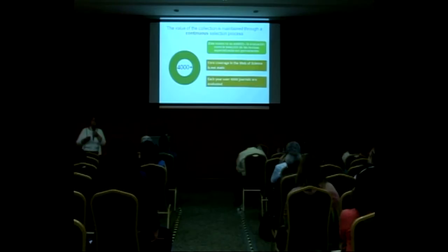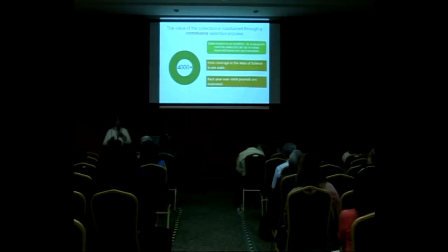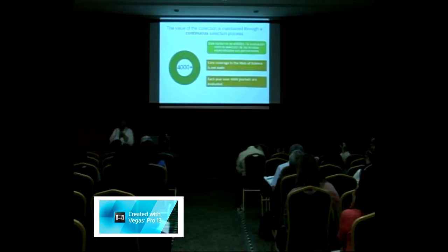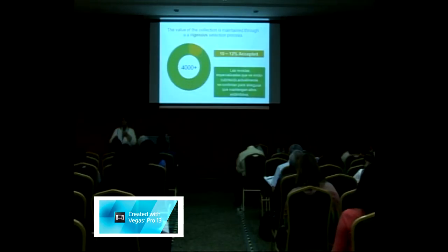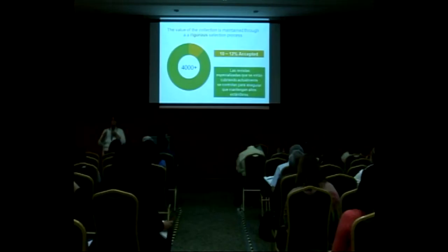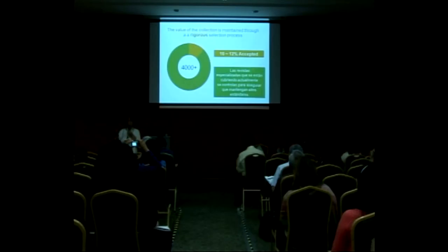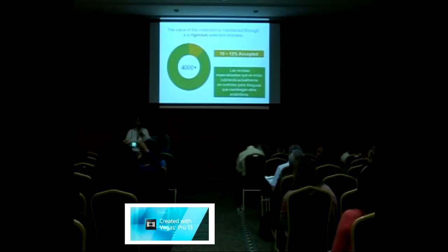How many journals do we evaluate? Our team covers a tremendous amount of work. We evaluate approximately 4,000 journals every year with just a team of 12 people. They go through every evaluation from beginning to end. In these 4,000, not all are new journals — because what we do, and that's why I mentioned curation, is we also evaluate journals that are already covered. Once a journal is accepted, it does not mean it's carved in stone and stays there forever.